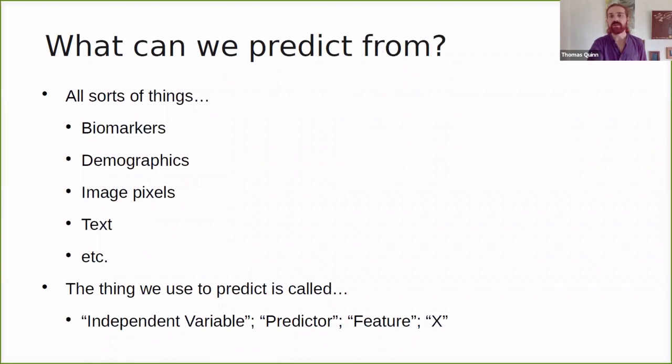What is it that we can predict from? Well, all sorts of things. We could predict from biomarkers, demographics, the pixels of an image, text, and so on. The things we use to predict are usually called something like independent variable, which you see more commonly used in statistics, a predictor, a feature, or just variable X. I'll generally use the term feature here because that's most comfortable for me.